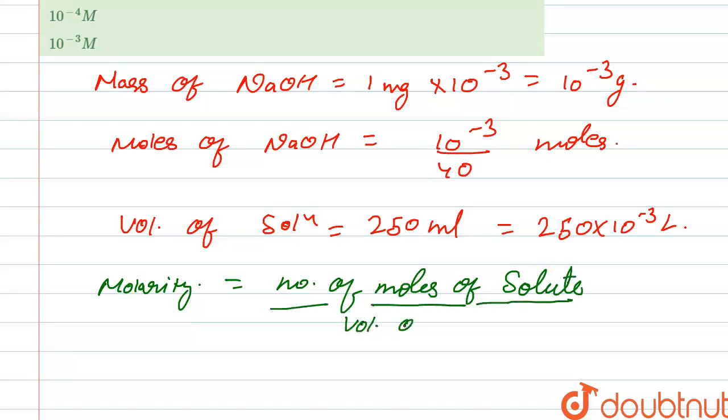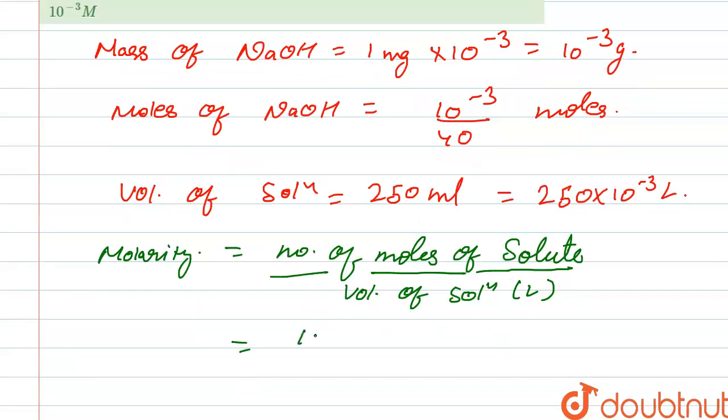So we put the values: that is 10 to the power minus 3 upon 40, into 250 into 10 to the power minus 3. By 40 into 250 into 10 to the power minus 3.